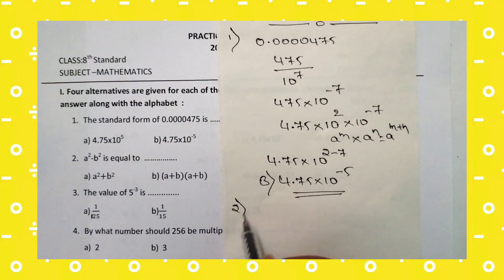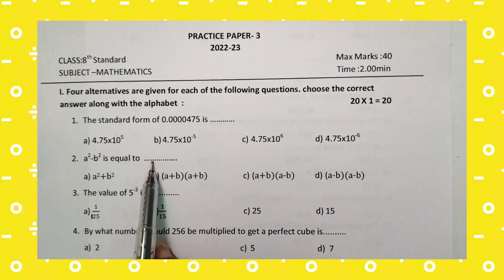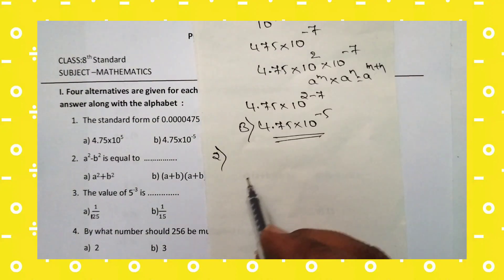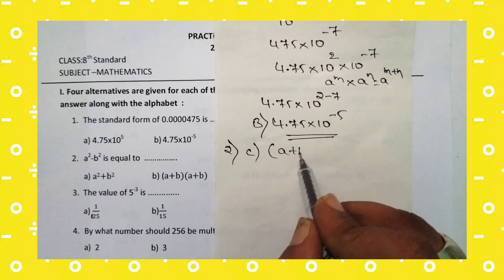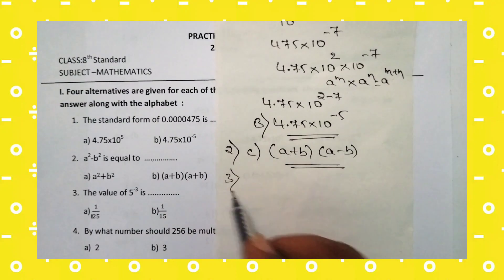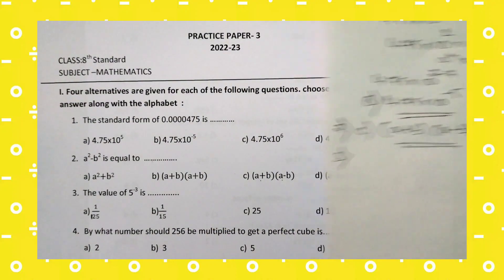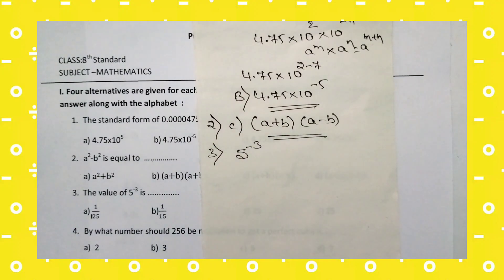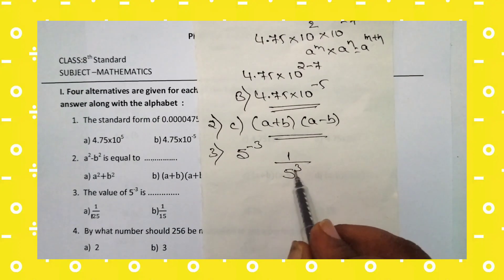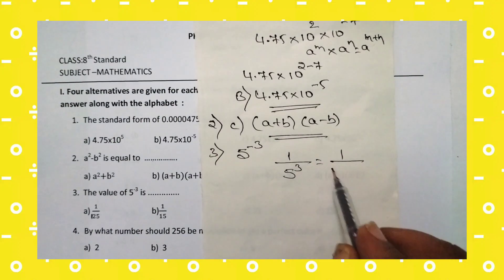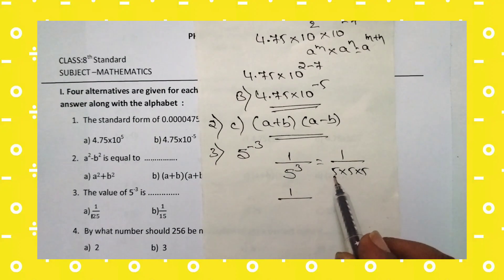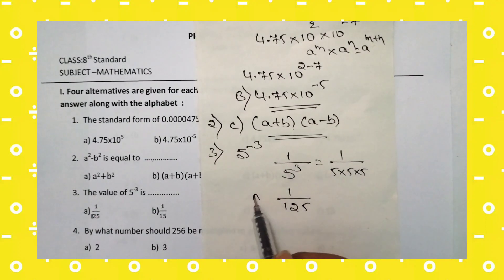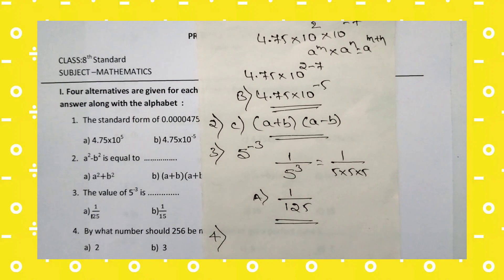Second question: a squared minus b squared is equal to — a squared minus b squared can be written as (a + b)(a − b). So the right answer for the second question is option C: (a + b)(a − b). Coming to the third question: the value of 5 to the power of minus 3. 5 to the power of minus 3 equals 1 divided by 5 cubed, which is 1 divided by 125. The right answer is option A: 1/125.